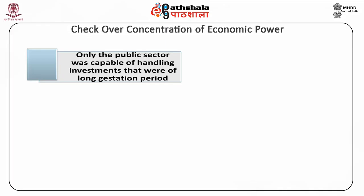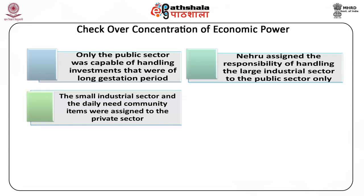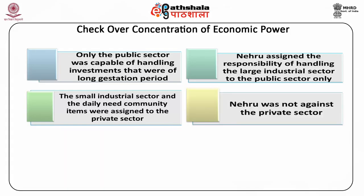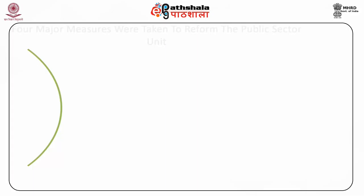In order to make a self-reliant nation, Nehru assigned the responsibility of handling the large industrial sector to the public sector only. The small industrial sector and the daily need community items were assigned to the private sector. Nehru was not against the private sector. The role of public sector units had been redefined in 1991 — it was not supposed to play a passive role but to actively involve and compete in the market with other private sector firms in the same field.